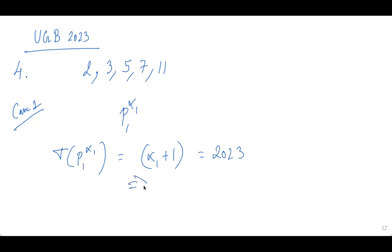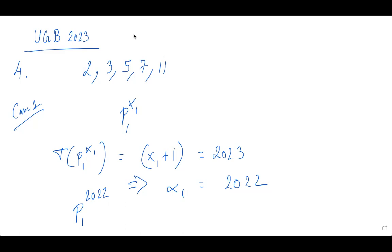So the numbers in Case 1 are of the form p^2022, where p ∈ {2, 3, 5, 7, 11}. These are all perfect cubes because 2022 is divisible by 3. So in Case 1, every such number is a perfect cube — none are favorable to my maximization goal. I exclude all of them.